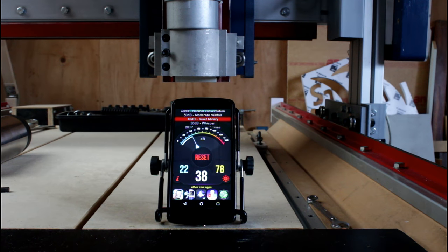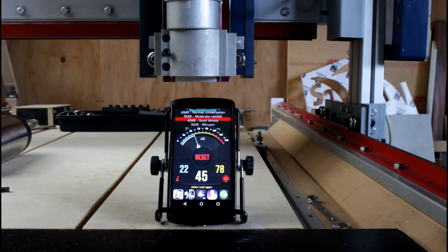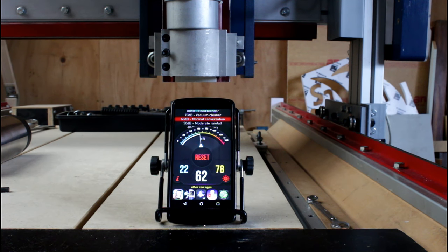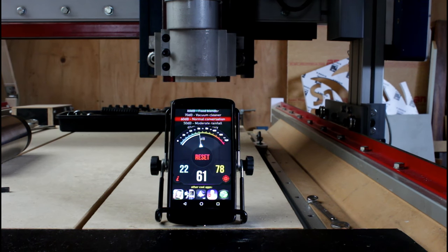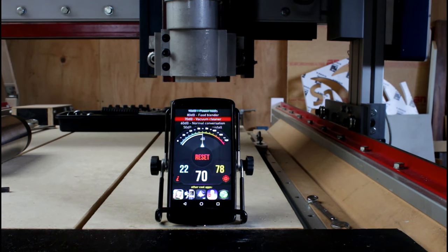So here we have the ambient room noise of the workshop. It's around about library level. This is the router fan starting as my fans are separate. And now the router.